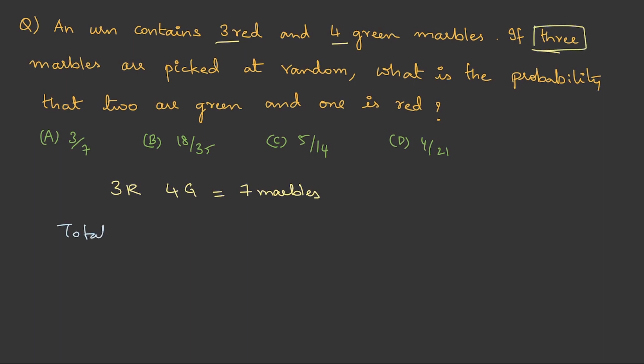In that we are only selecting 3 marbles. So total outcomes, that is from 7 we need to choose 3. This is 7 factorial by 3 factorial into 4 factorial. This is 35. Then comes the favorable outcomes.